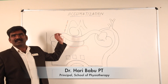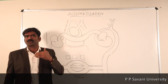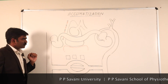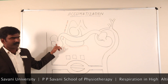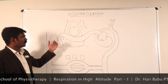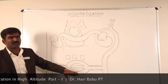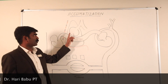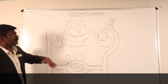Today's topic is acclimatization. We are going to discuss what happens to the respiratory system when we go to high altitude. The primary function of the cardiovascular system, respiratory system, and blood is to deliver oxygen from the lungs to the tissues and carry carbon dioxide back from the tissues to the lungs.